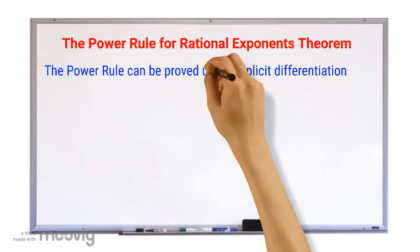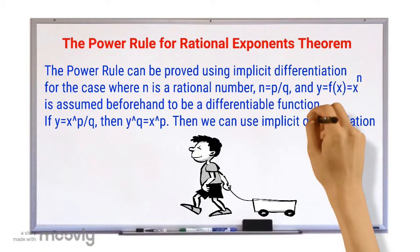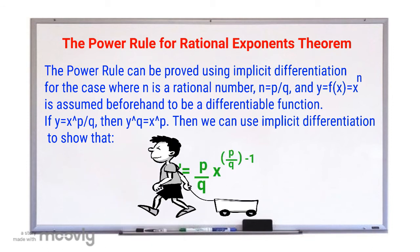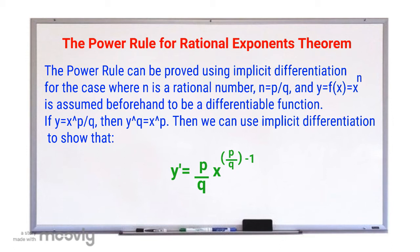The power rule can be proved using implicit differentiation for the case where n is a rational number, n equals p over q, and y equals f(x) equals x to the power of n is assumed beforehand to be a differentiable function. If y equals x to the power of p over q, then y to the power of q equals x to the power of p.